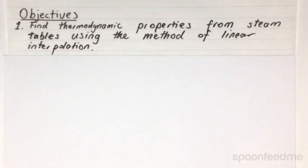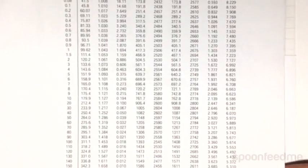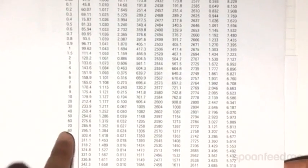If we look at our steam tables, there are a set number of data available to us. Suppose, for example, that we want to find the value of enthalpy at 75 bar.